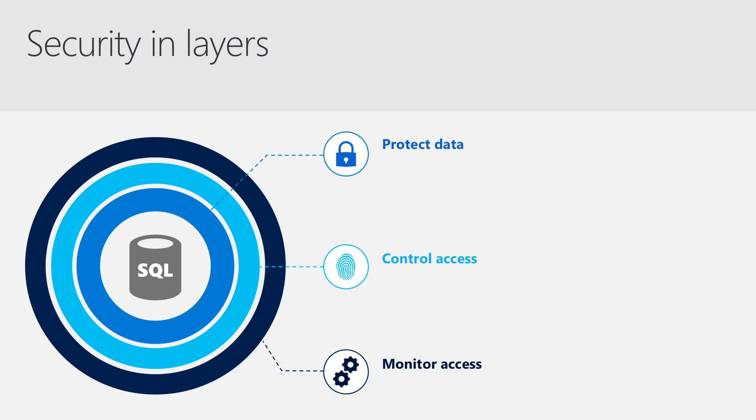For SQL Server, we think about security in terms of layers, and what we call defense in depth. At the center, you have your data. The first layer of security is how you protect the data itself, typically by using encryption. The second layer is how you control access — who is allowed to access which parts of your data. And the outer layer is how you monitor access, tracking the activities that are happening against your database. SQL Server has features that empower customers to secure each of these layers. I'd like to run through a few that I think are especially important to show you how SQL Server on Linux supports the same security capabilities that it supports on Windows.